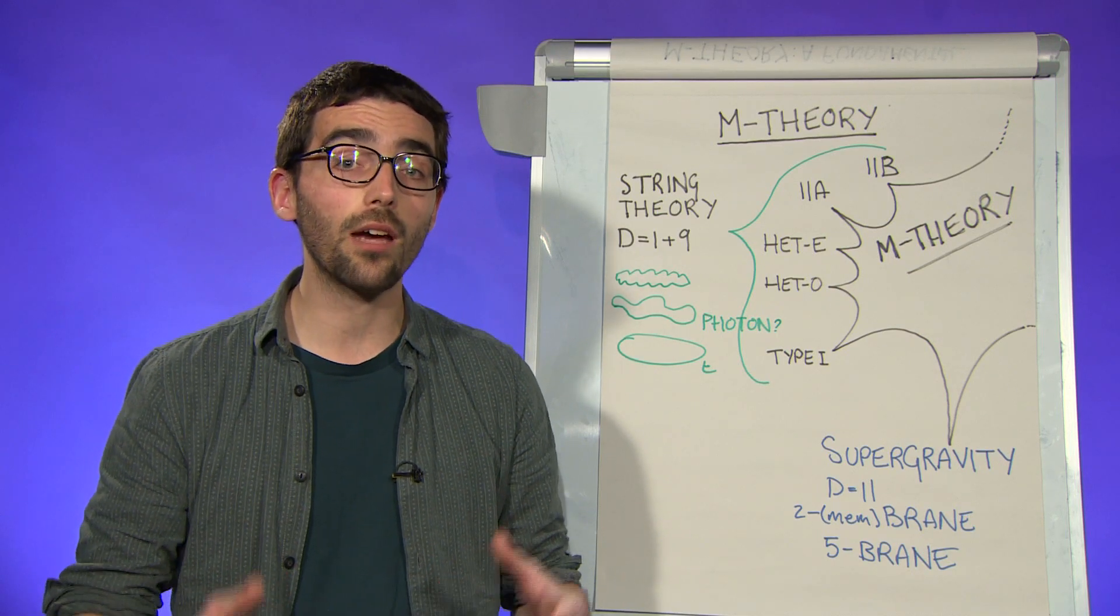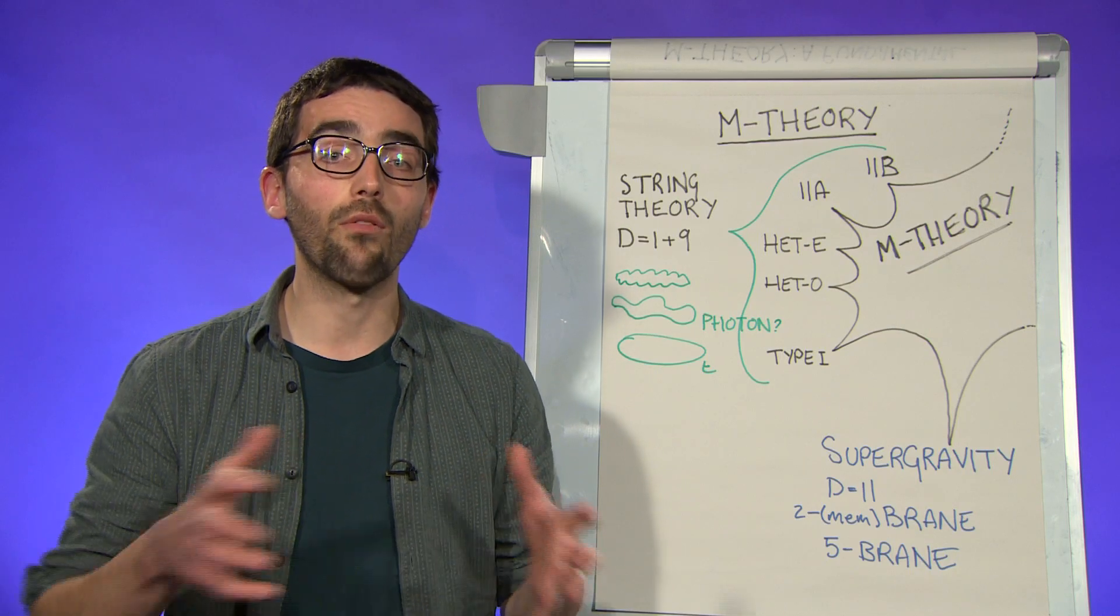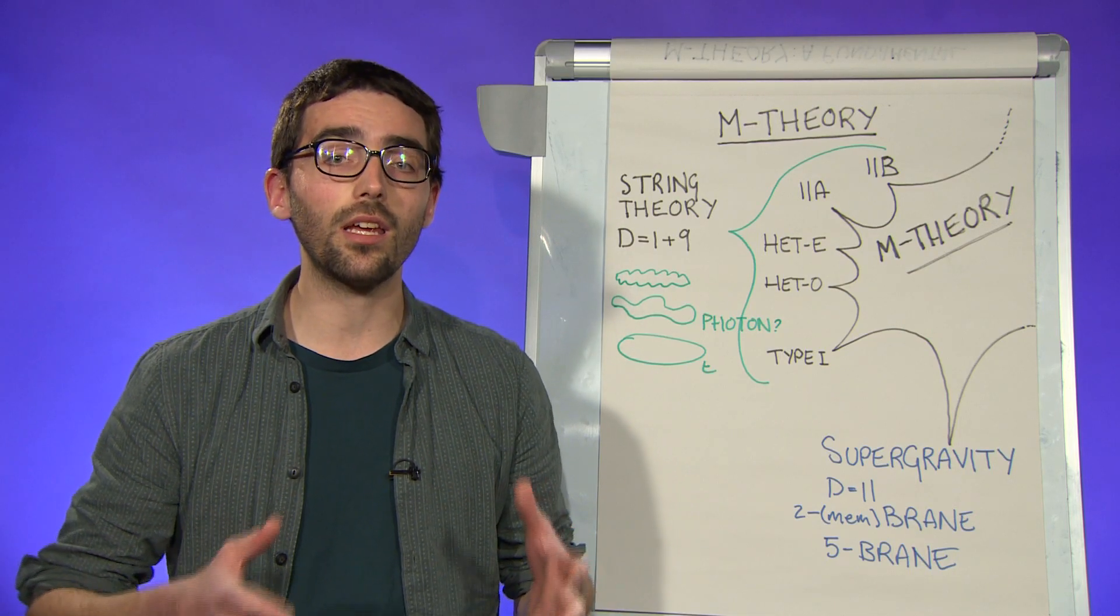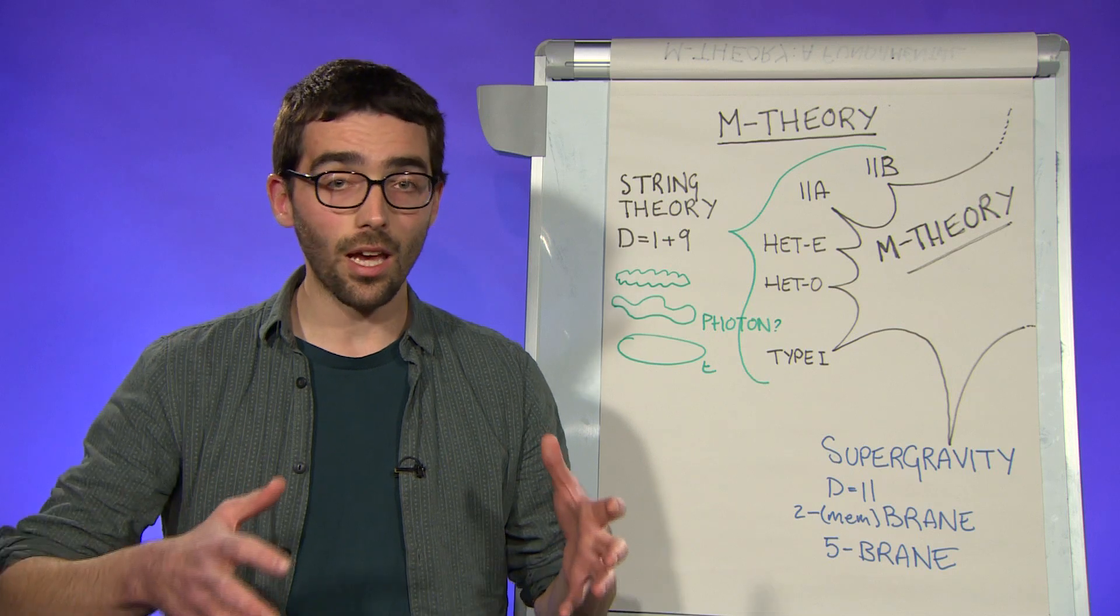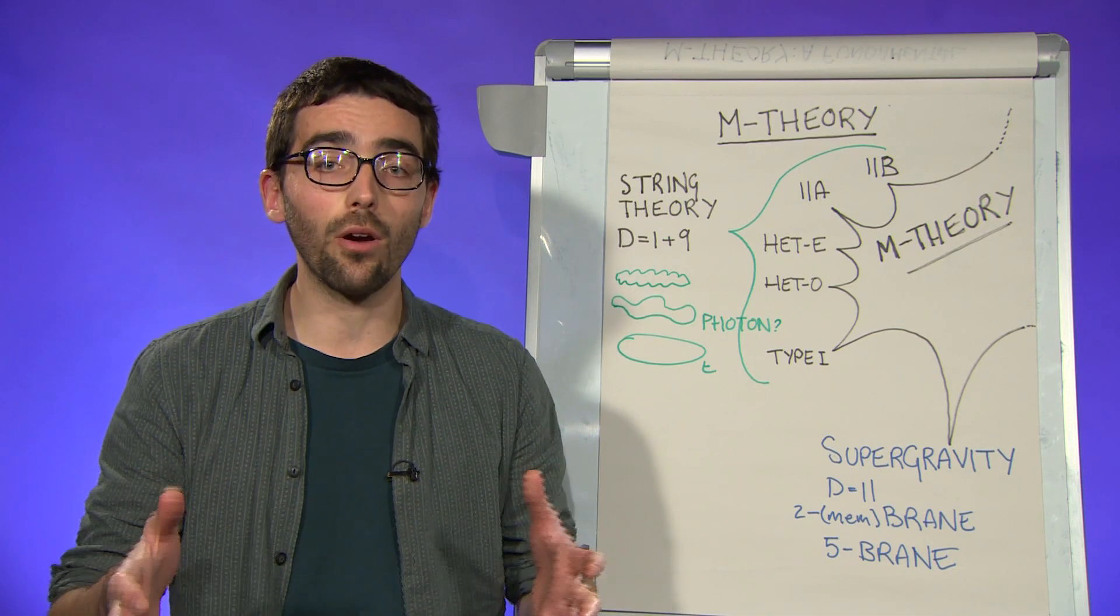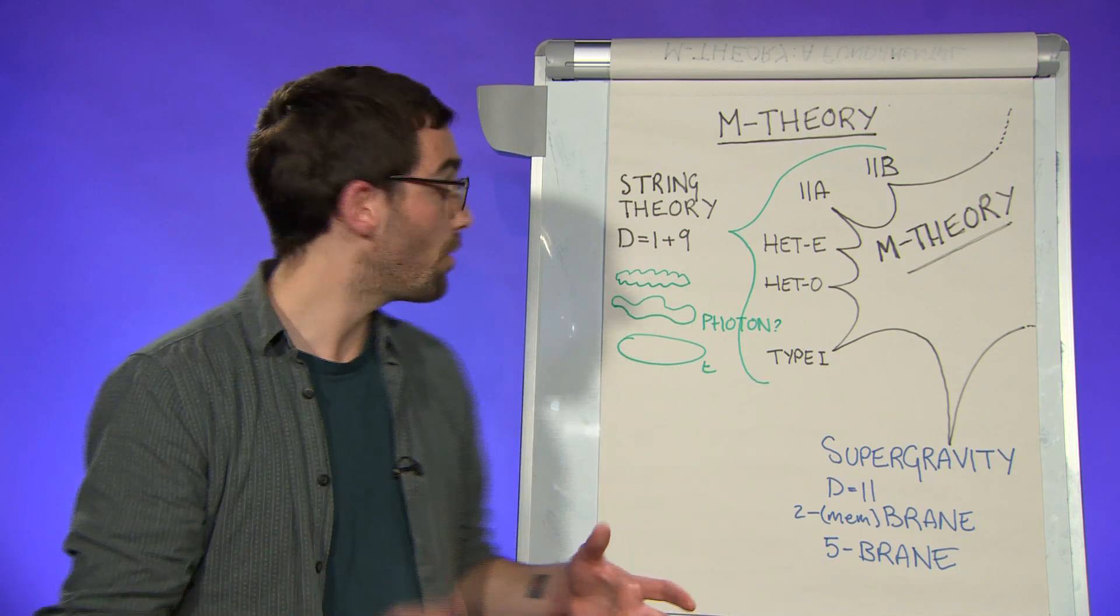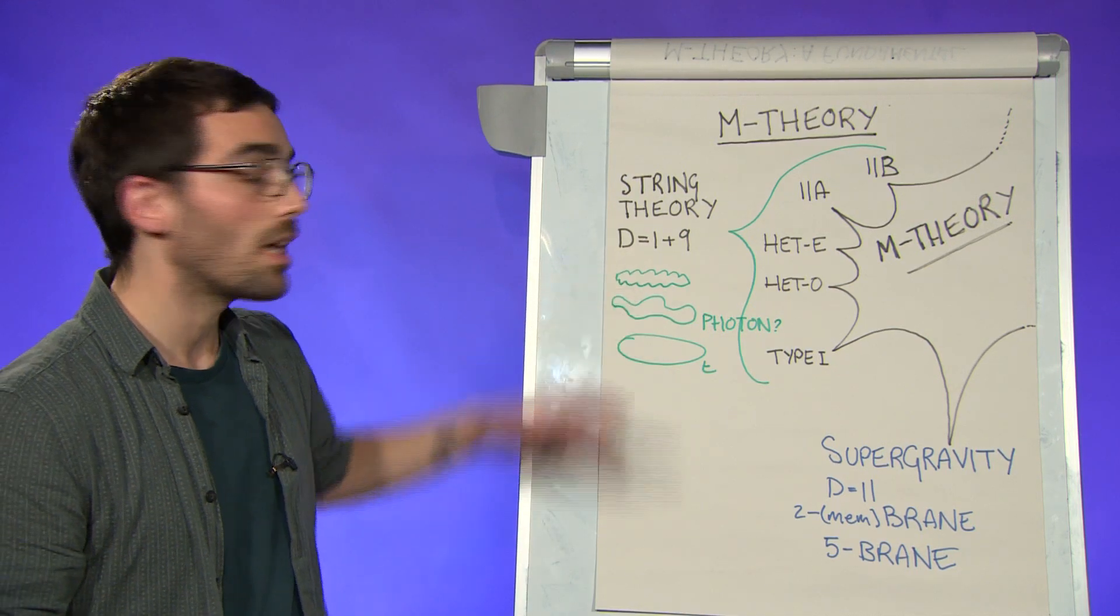On the one hand, we have string theory, the relativistic quantum mechanics of one-dimensional extended objects. The basic idea here is that strings can vibrate in different modes, much like those on a guitar, and each mode can represent a different fundamental particle. This mode is a photon, this mode is an electron.